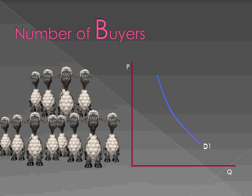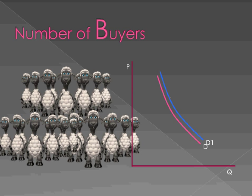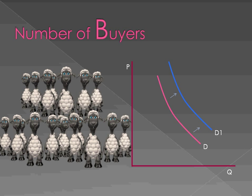Number of buyers also has an impact on demand. The more buyers we have, the greater the demand we have for both normal and inferior goods.